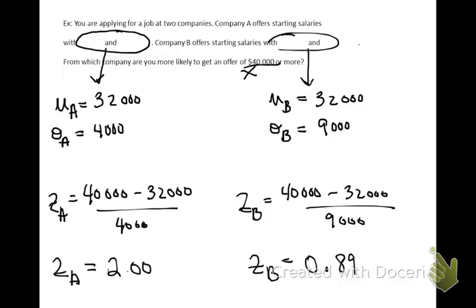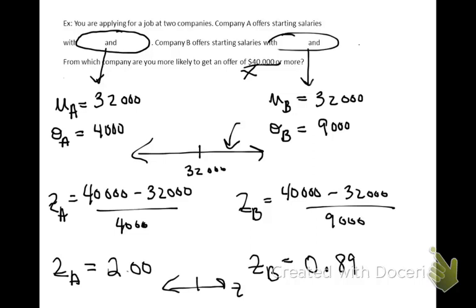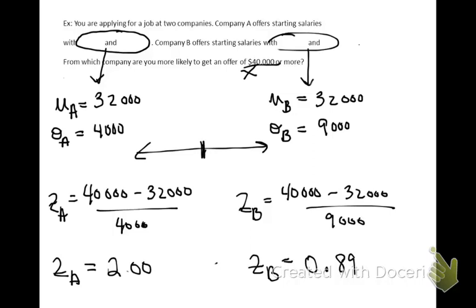Both these values are positive, so we know that the observation is above the mean. The mean for both companies is $32,000 and the observation x was $40,000 — it fell above the mean, so the z-score fell above zero for both. The z-score tells us how far the observations were from the mean. Company A says $40,000 is two tick marks away; Company B says it is 0.89 of a tick mark away. Because Company B is closer to the average value, Company B is more likely to give an offer of $40,000 or more.